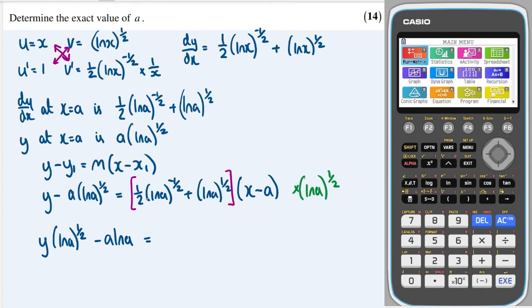So multiplying through is going to give me, in this first term, it's just going to be a half. And then (ln a) to the minus a half times (ln a) to the half is just (ln a) to the zero, which is just a one. So it's just a half. And then here we have plus and (ln a) to the half times (ln a) to the half is just a ln a. Great. And let's bracket that up and then multiply that through by x minus a.